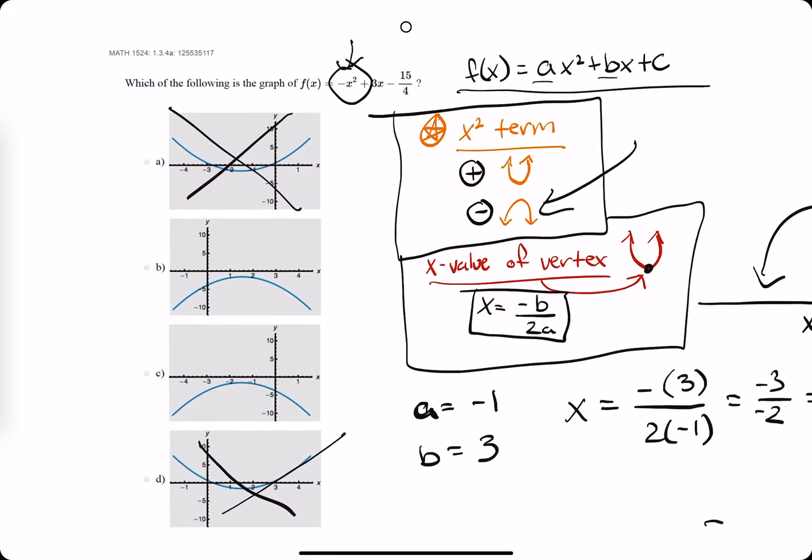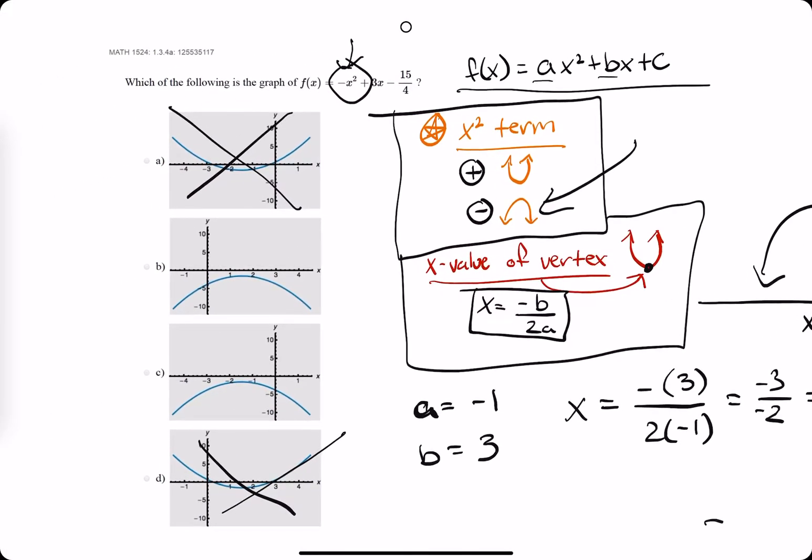So if we look at our remaining options here, c has its vertex in the negative. Maybe it's negative 3 halves, but we don't want negative. We want positive 3 halves. So if we look right here, this should be approximately 3 halves. So b is looking pretty good. We bring out our eraser and find out that b is the correct option.